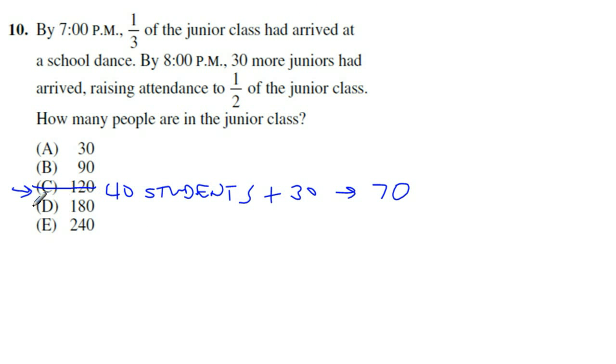So let's try a different one here. Let's go back and let's start with D now. Say there's 180 students. Now it says one-third of the junior class had arrived. So one-third of 180 would simply be 60. So that gives us the 60 students here. And then by 8 o'clock p.m., 30 more juniors had arrived. So we add 30 more, and we'd get a total then of 90 students. So is that half of the junior class? Well, is 90 half of 180? In this case, it is. So we know 180 would be the correct answer here.